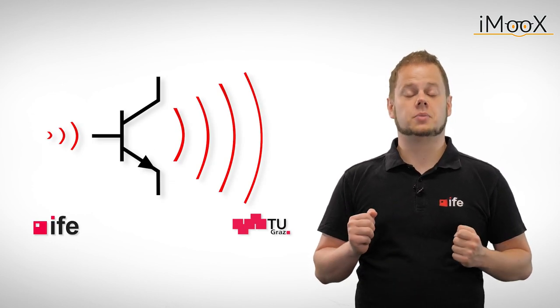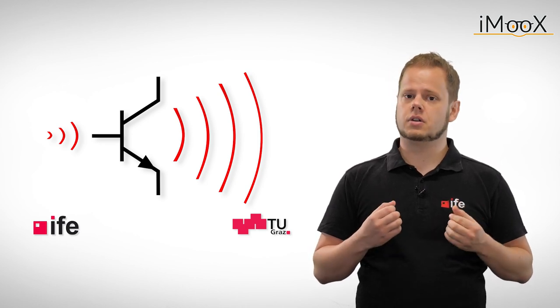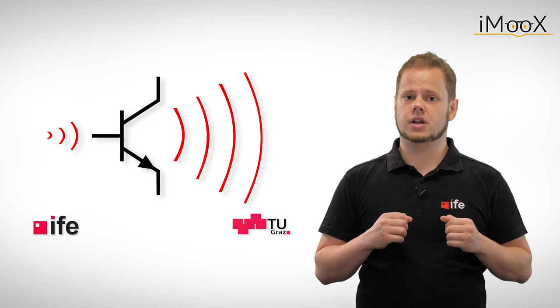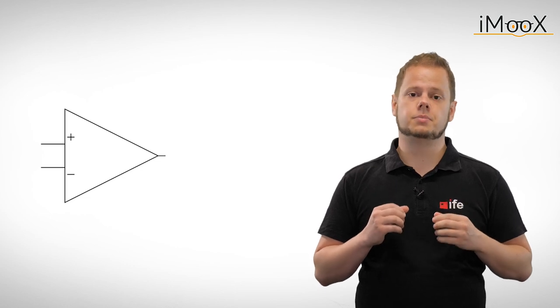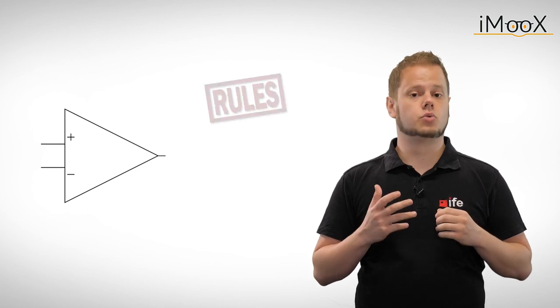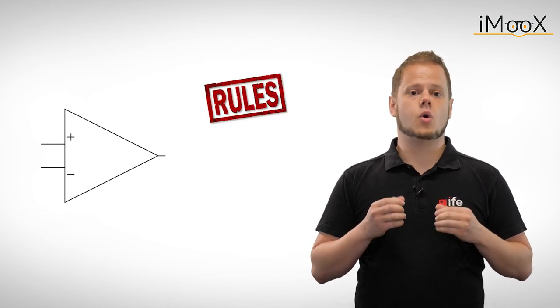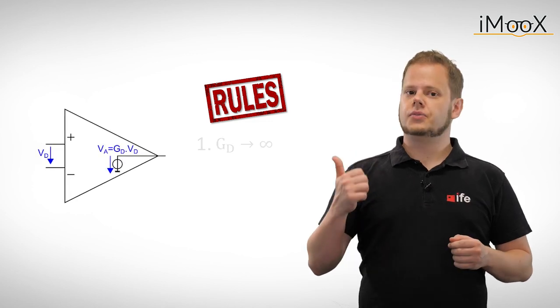Now we know what's inside an operational amplifier. But do we have to deal with the internal structure of an operational amplifier each and every time? Fortunately not. An operational amplifier has three properties which are used in circuit analysis. These can be seen as rules we can apply when we are dealing with operational amplifier circuits.